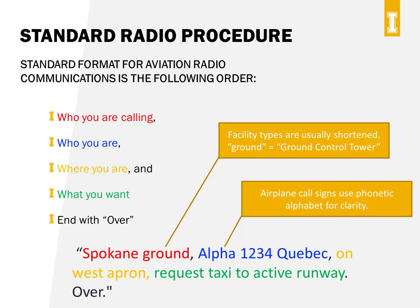Aviation radio communication normally follows a standard procedure or order. Look at the example: 'Spokane Ground, Alpha 1234 Quebec, West Apron. Request taxi to active runway. Over.' You start out by saying who you're calling — in this case, Spokane Ground. Then you say who you are using your plane's call sign — Alpha 1234 Quebec. Then where you are: West Apron, or you might say inbound 10 miles. Then you make your request or relay your information: request taxi to active runway. And then you end with 'over' so the receiver knows that you're done.